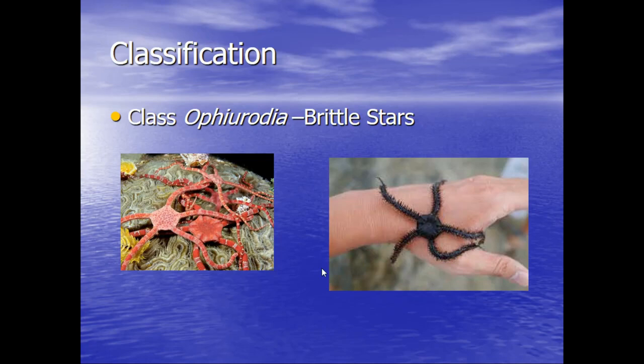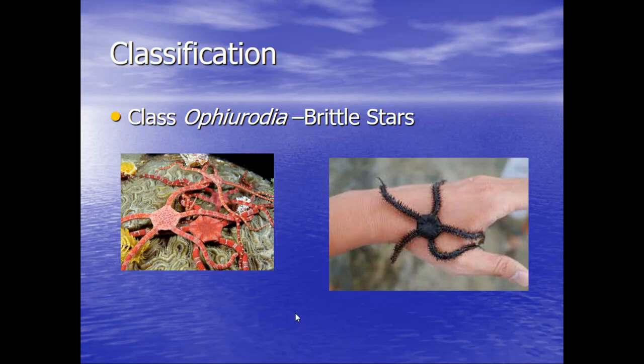Next we have class Ophiroidia. These are the brittle stars, and the brittle stars get their name because of their fragile appearance. You can see their arms are very thin. Here is their central portion of their body, and the arms that extend out from that body portion are very thin, giving them a very brittle or fragile appearance. That is how they got their name as the brittle stars.